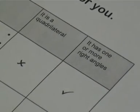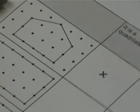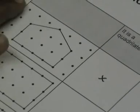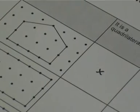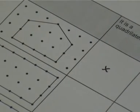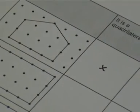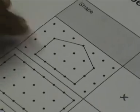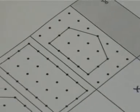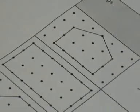As you can see, one has been done for you. This one is not a quadrilateral because it has five sides, and a quadrilateral needs to have four sides. And it has two right angles, as you can see if you use a protractor. There are two right angles over there.